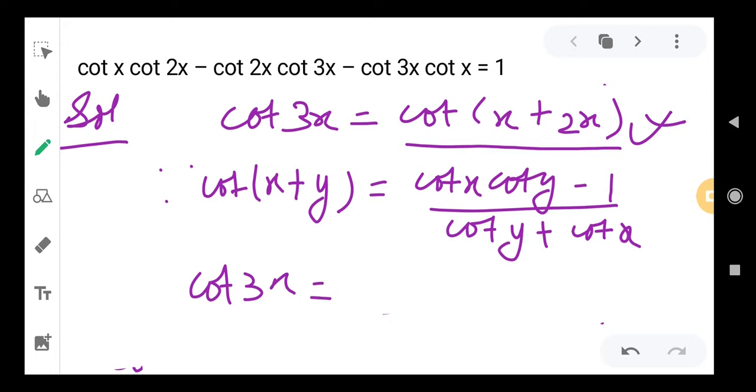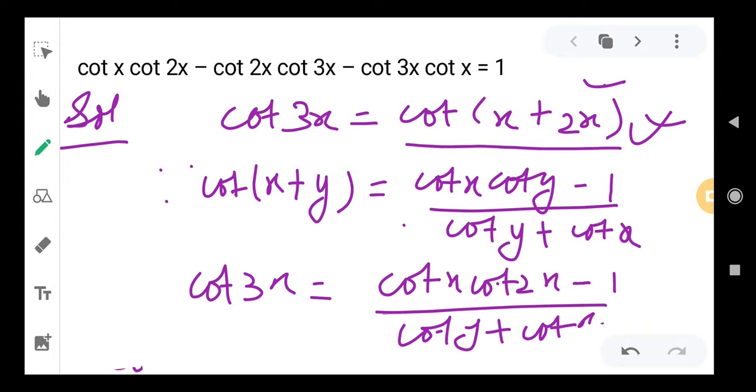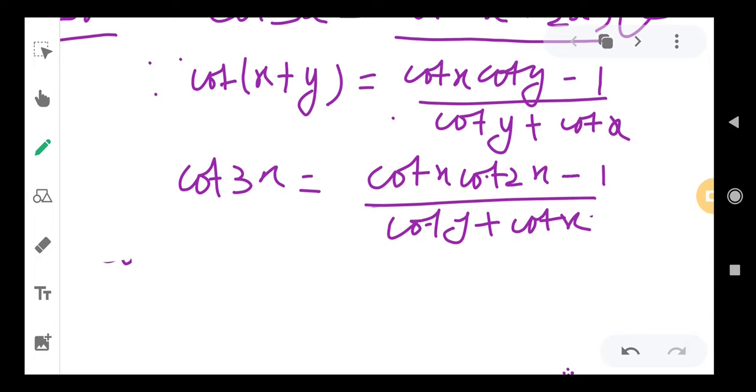Just put this formula into this equation and it becomes (cot x cot 2x - 1) divided by (cot y + cot x). So this is our formula for cot(x + y). Now we are going to expand and solve further.